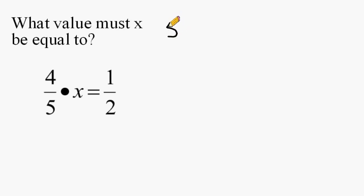Let's say we had the problem 5 times x equals 10. Then, we could just use mental math to figure out that x should be equal to 2 because 5 times 2 is equal to 10.